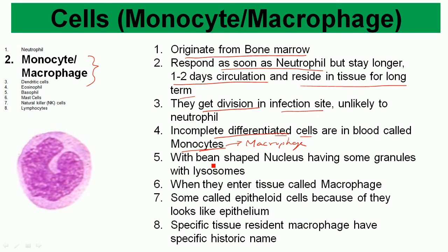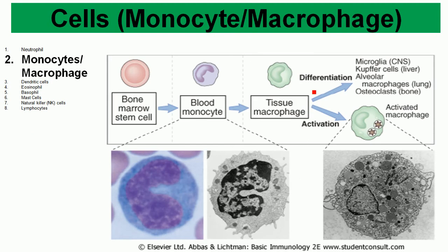Macrophages have a bean-shaped nucleus with some granules containing lysosomes. When they enter tissue, they are called macrophages, and some are called epithelioid cells because they look like epithelium — this is how they were historically discovered. Tissue-resident macrophages have specific historic names depending on their location: in the central nervous system they are called microglia, in the liver they are called Kupffer cells, in the lung they are called alveolar macrophages, and in the bone they are called osteoclasts.